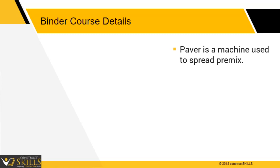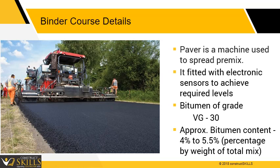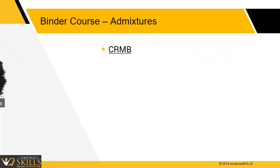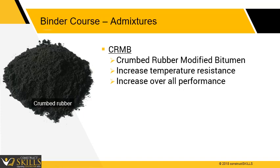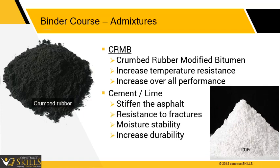A paver is a machine used to spread pre-mix. It is fitted with an electronic sensing device which helps to achieve required levels and slope. Commonly, grade VG30 is used, and the amount of bitumen added ranges from 4% to 5.5% by weight of total mix weight. Crumbed rubber modified bitumen uses 10 mm or less ground rubber added to increase temperature resistance and overall performance of the road. Cement or lime is also added to stiffen the asphalt, improve resistance to fractures, moisture stability, and durability of the road; it is added at about 2% to 3% of the weight of the mix.